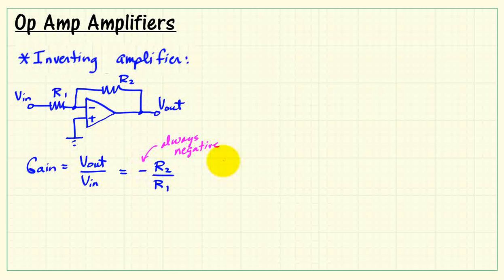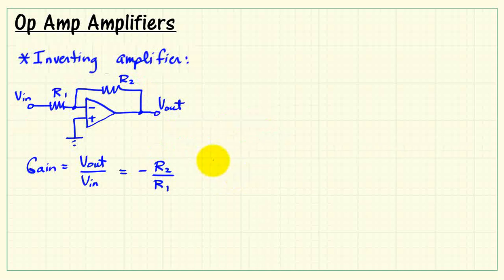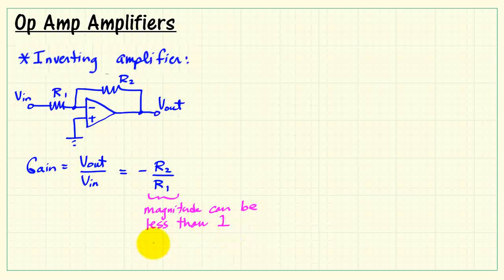With the negative sign, the gain is always negative, no matter what your resistor choice is. For example, if we were to set both resistors to the same value R, we would have a gain of negative 1. So 1 volt on the input would produce negative 1 volt on the output. The output always goes in the opposite direction of the input. If we look at the ratio of resistors, we note that the magnitude can be less than 1, in which case the amplifier would serve as an attenuator.